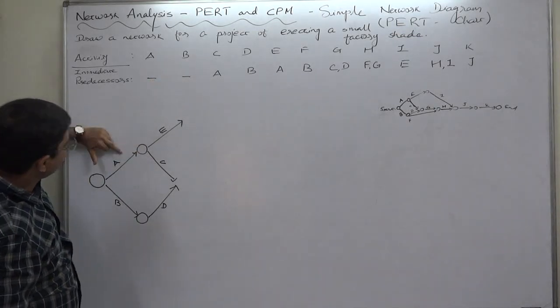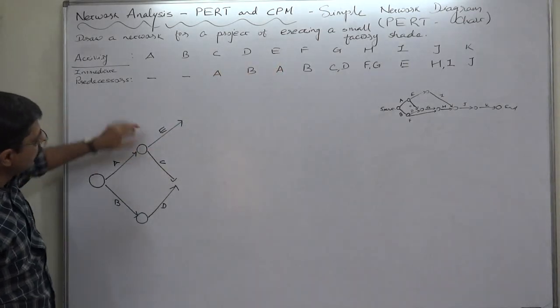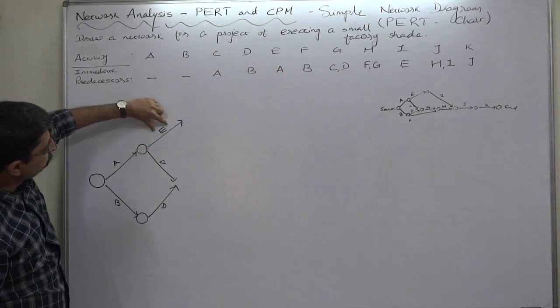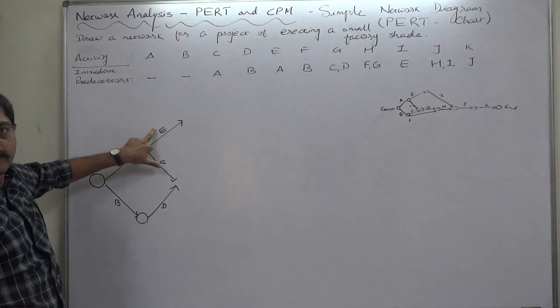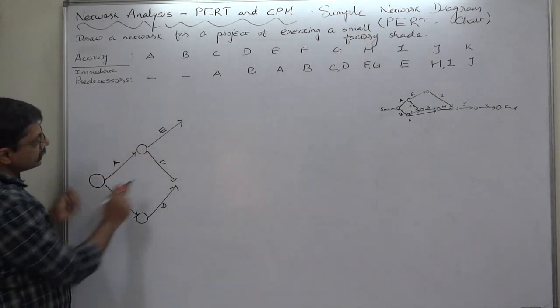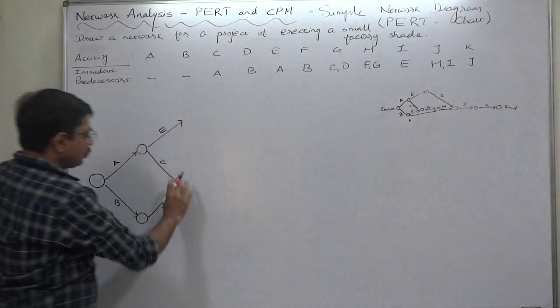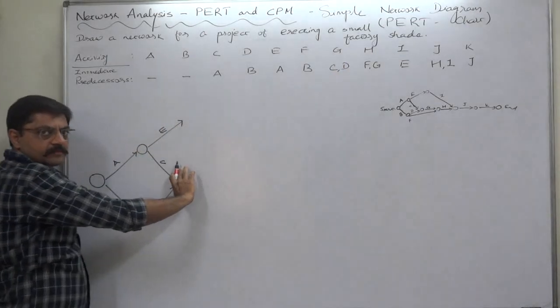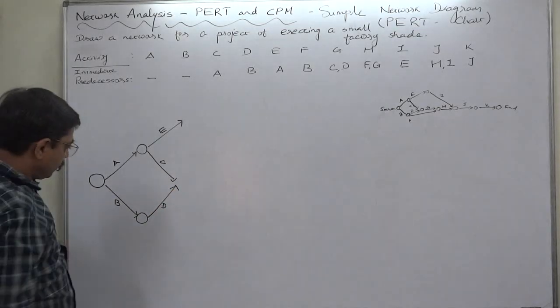A becomes predecessor of C and E. C and E—we didn't follow the vertical pattern of giving names to the arrows because we want C and D as common predecessors of G. That's why we are giving the names ignoring the vertical order.